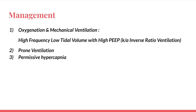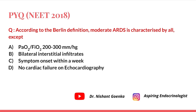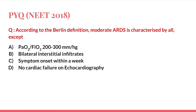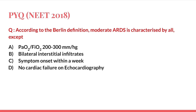Returning to the question: according to the Berlin definition, moderate ARDS is characterized by all except — Option A: PaO2/FiO2 ratio 200–300 mmHg. We know that ratio of 200–300 is mild ARDS, not moderate. The other options — bilateral interstitial infiltrates, symptom onset within a week, and no cardiac failure on echocardiography — are all true for ARDS. So Option A is wrong, making it the correct answer. PaO2/FiO2 100–200 mmHg corresponds to moderate ARDS.